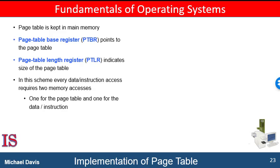Most contemporary CPUs, however, support much larger page tables — for example, 2 to the 20th power entries. For these machines, the use of fast registers to implement the page table is not feasible. Rather, the page table is kept in main memory, and the page table base register points to that page table in main memory. Changing page tables requires changing only this one register, substantially reducing context switch time.